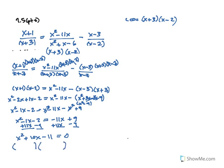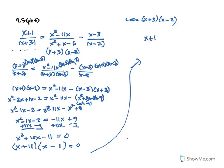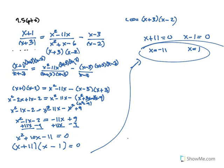So x squared plus 10x minus 11 equals 0. I'm going to factor it. Factors of 11 are just 1 and 11, and they give me a 10. So it's plus 11 and minus 1. Therefore x plus 11 equals 0 and x minus 1 equals 0, giving x equals negative 11 and x equals 1. Those are your solutions. When you check them in the denominators, they don't create 0 in any denominator, so you can use them.